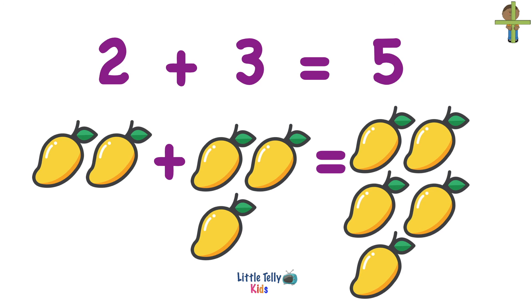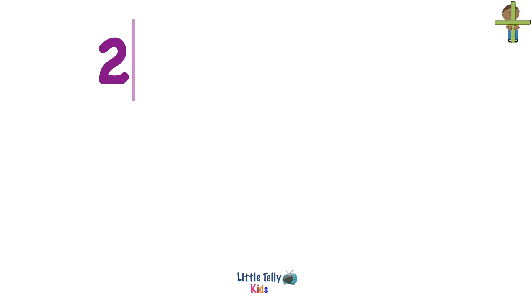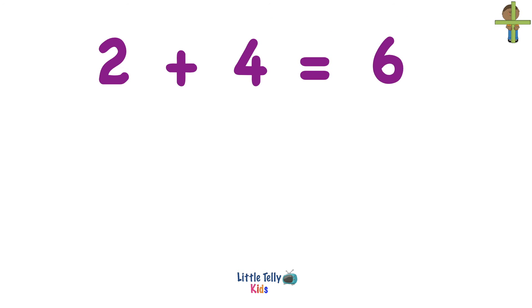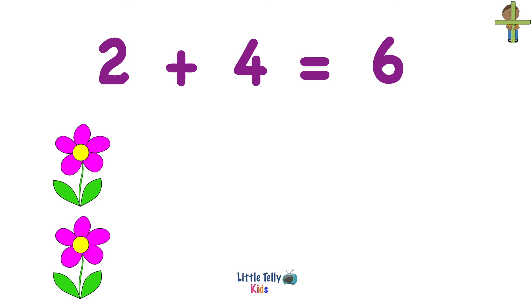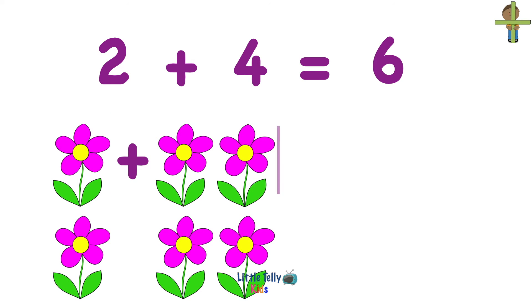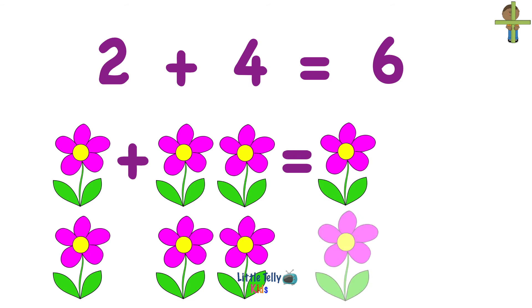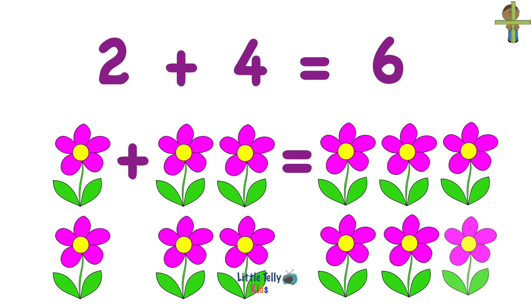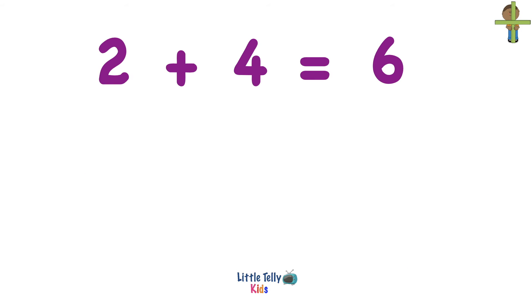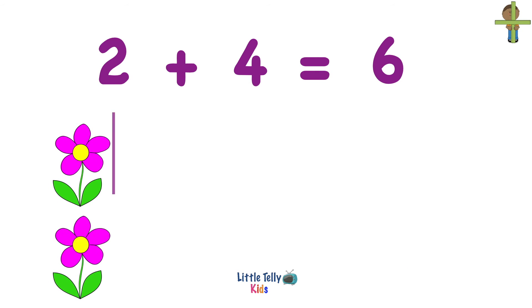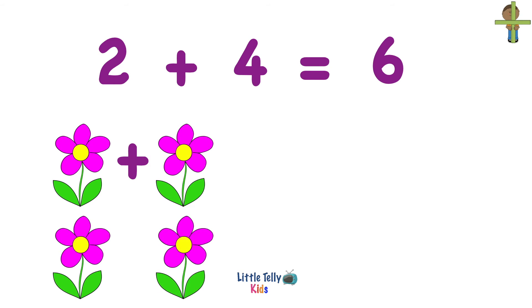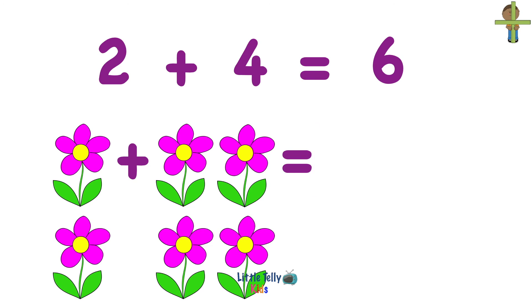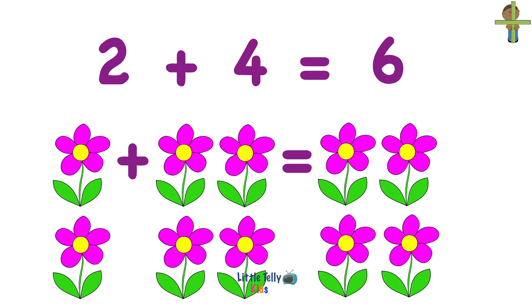Now let's solve another addition problem. 2 plus 4 equals 6. Let's learn it with the help of an example. So 2 flowers plus 4 flowers equals 1, 2, 3, 4, 5, 6. 6 flowers. Let's look at it once again. There are 2 flowers, plus now 4 more flowers come in. 2 flowers plus 4 flowers equals 6 flowers.